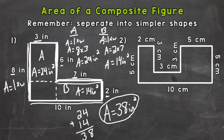Let's jump into number two and see how we do this one — it's a little more complex. For this one, I'm going to separate it into three simpler shapes: two rectangles and a square. I'm going to name them A, B, and C.